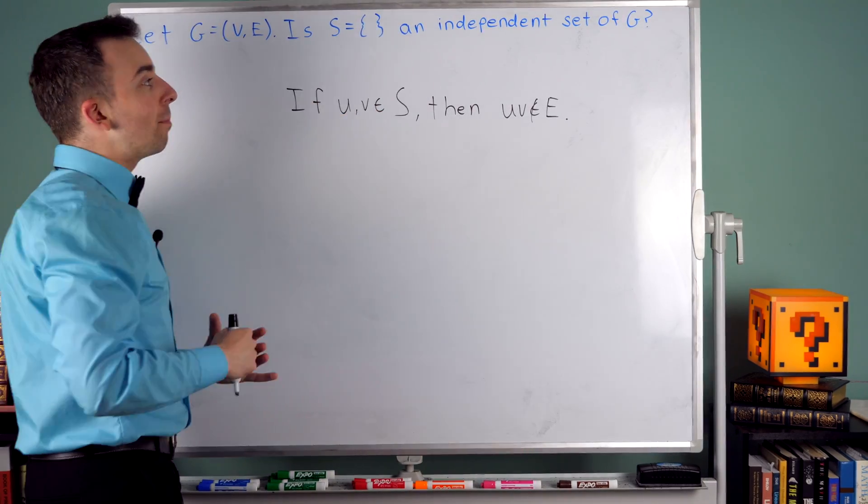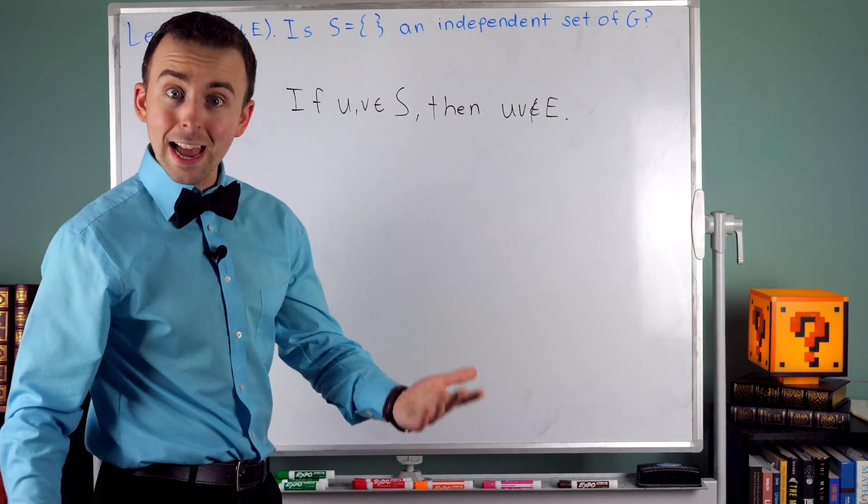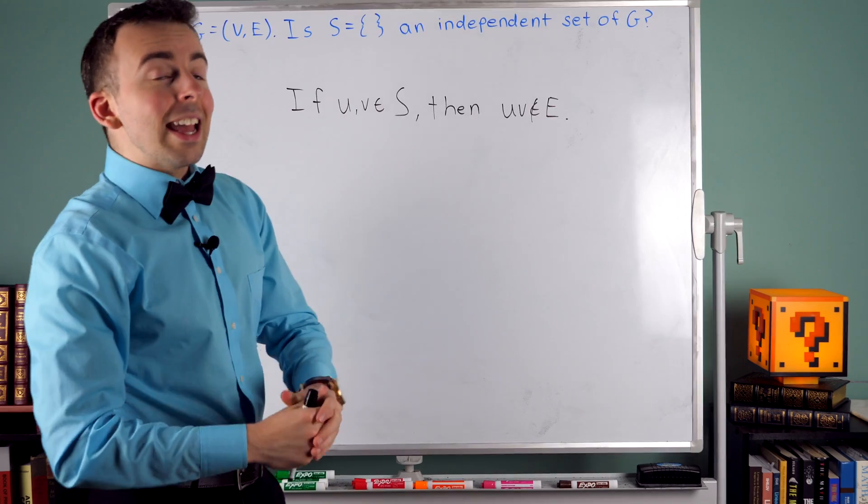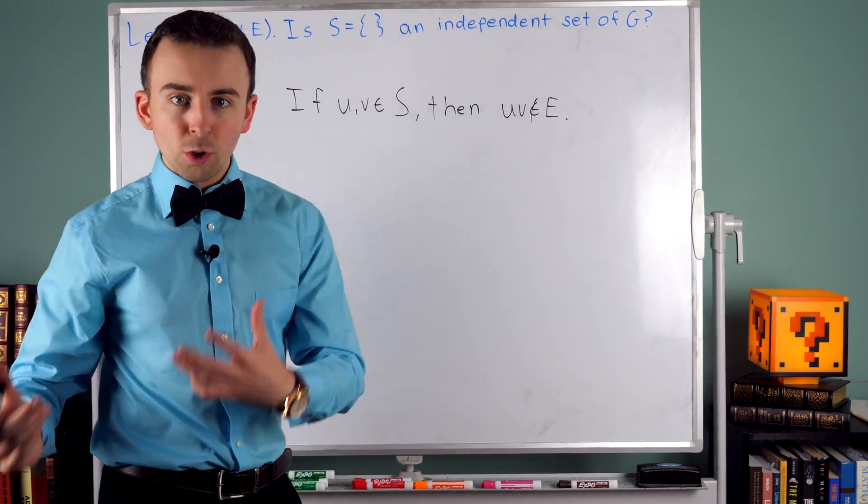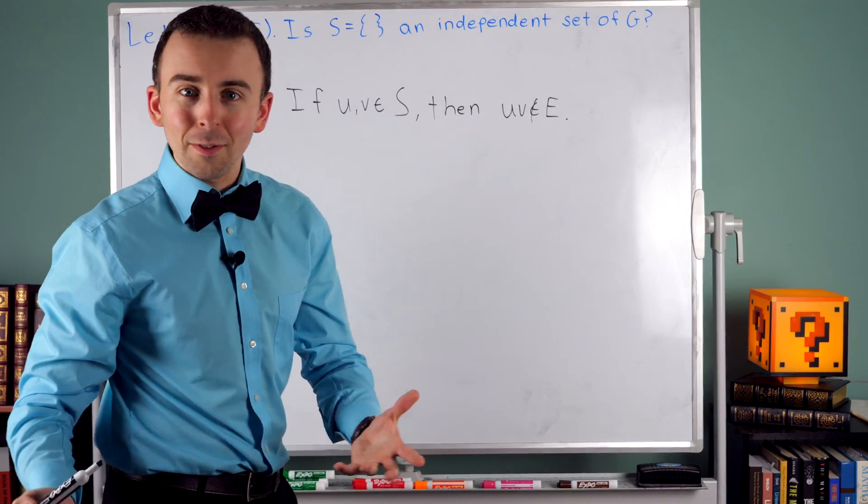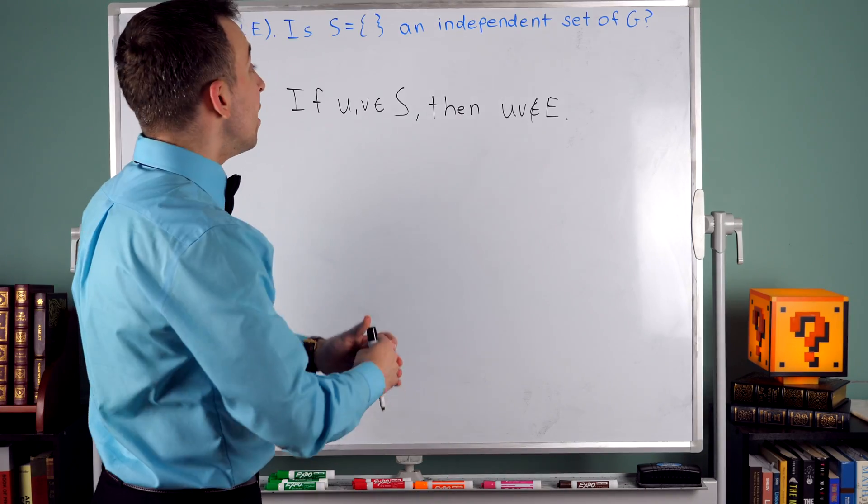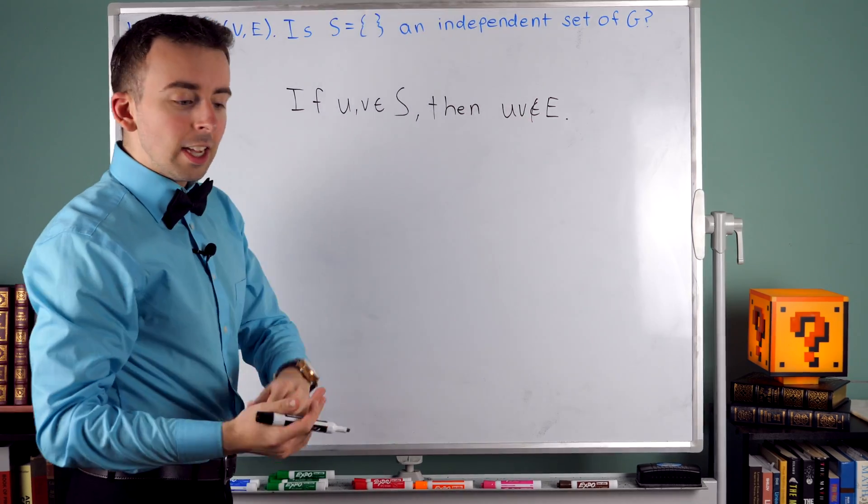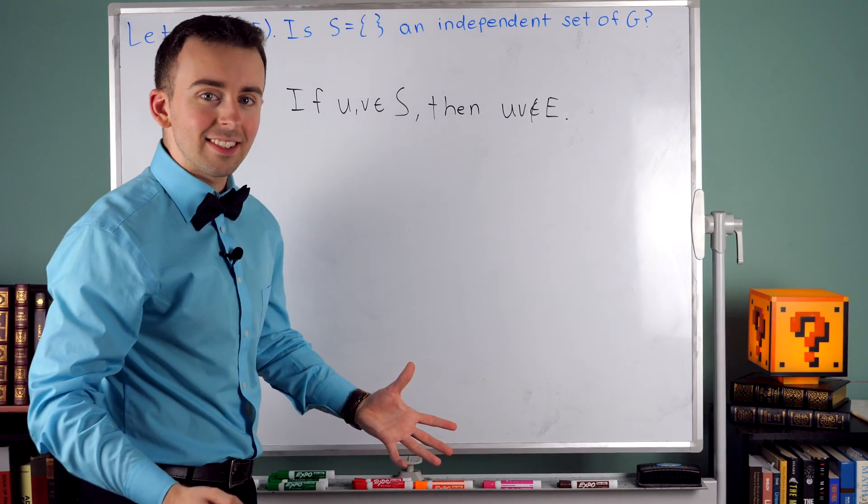So, is the empty set an independent set of every graph? Yes, the empty set fits this definition. It fits the definition because it's basically a vacuous truth. There are not any two elements to take from the empty set. We don't have two vertices to take from the empty set. So it's never able to contradict this condition, which is what it would have to do for it to not be an independent set.